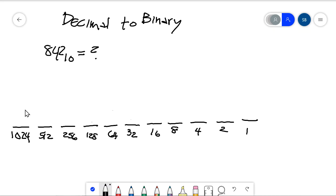When I try and subtract 842 minus 1024, I get a negative number. So I'm going to put a zero there. 842 minus 512, that should be a positive number as long as I know how to subtract well. So 842 and 512, we'll set this up a little bit more formally because it's a little bit harder.